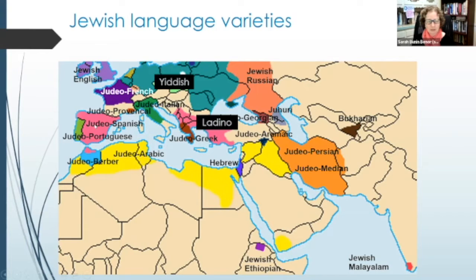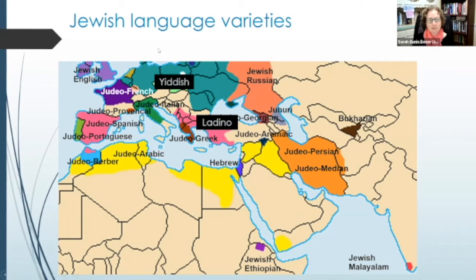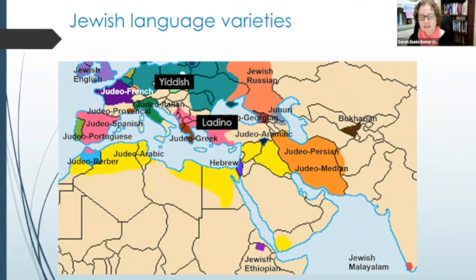Ladino originated in Spain as Judeo-Spanish, and was maintained outside of its original land in North Africa and the Ottoman Empire. Yiddish, which is not an endangered language, is also an exception because it started in Germanic lands and was maintained in Slavic lands after Jews moved eastward. These languages are a little different from other Jewish languages because they continued to develop in a land where they did not have much contact with the non-Jewish correlates of their languages.